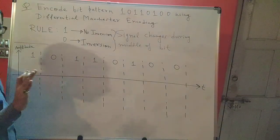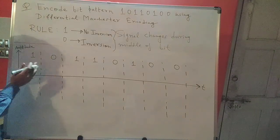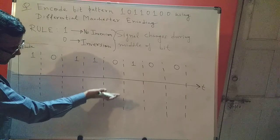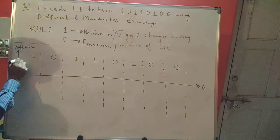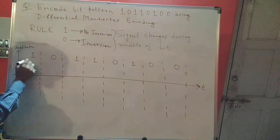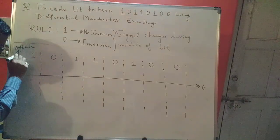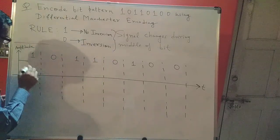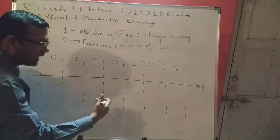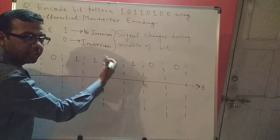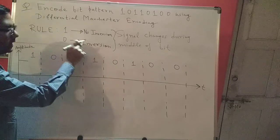Here I find a one, so one represents no inversion. Let's say I'm starting from the positive part of my time axis. Starting from the positive part, since one represents no inversion, if I am at the positive part I'll remain at the positive part — I don't need to go to the negative part. Inversion here means in terms of levels: if you're above the time axis you'll go below, and if you're below you'll go above. If the bit is zero it represents inversion, but if it's one it represents no inversion.